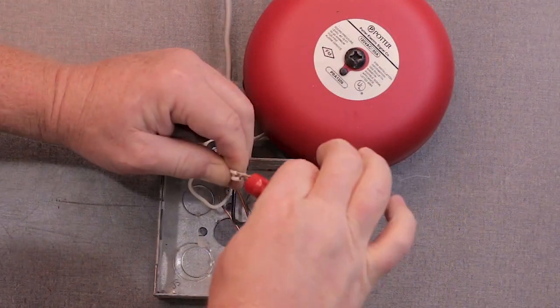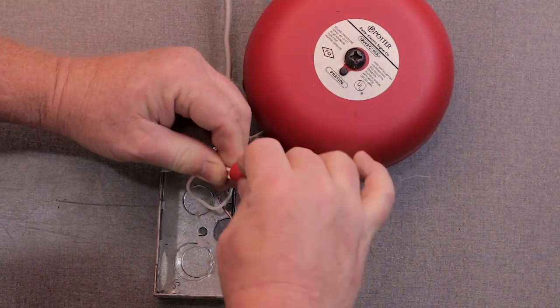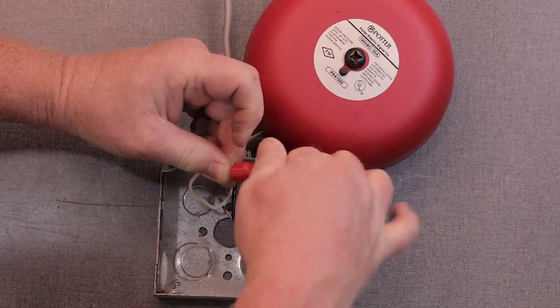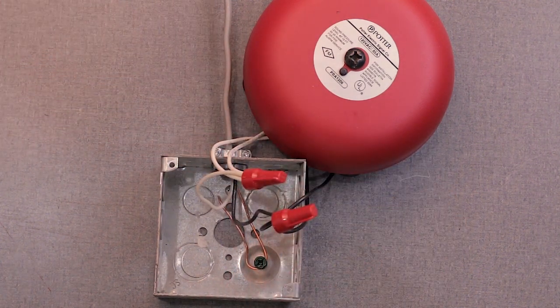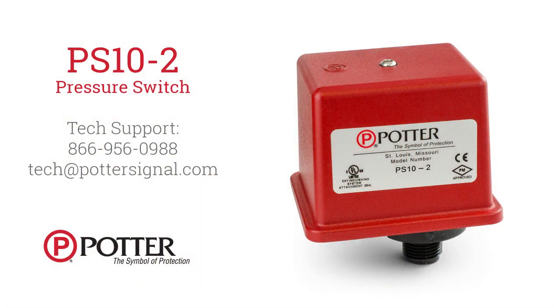When the pressure switch activates, the common and normally open terminals will close. This will switch the hot wire that is on the common terminal out through the normally open contact. If you have further questions about any of our products, please contact our tech support team by calling 866-956-0988 or emailing tech at pottersignal.com.